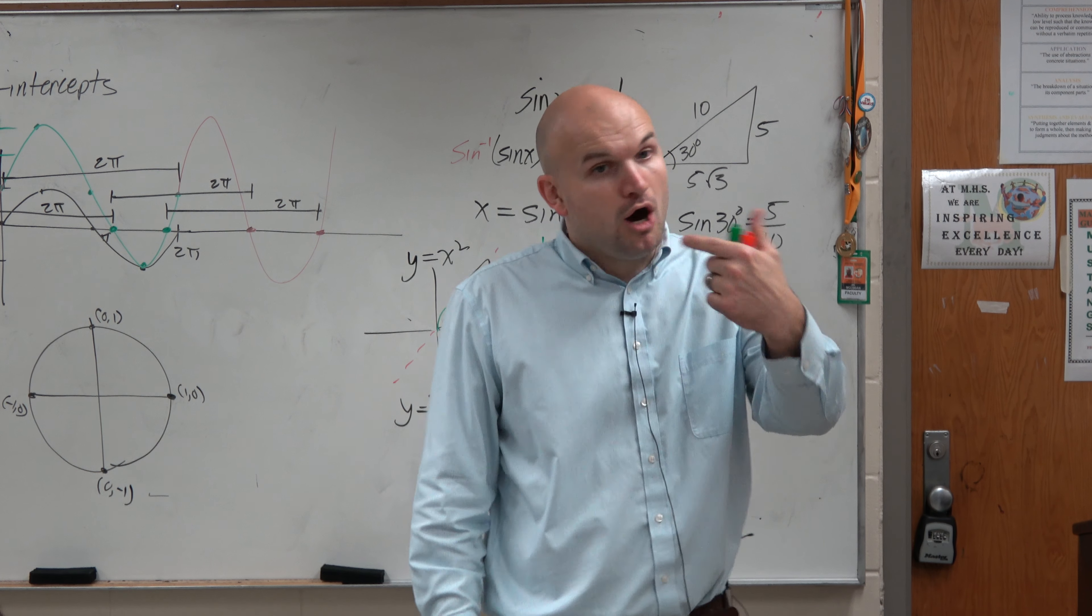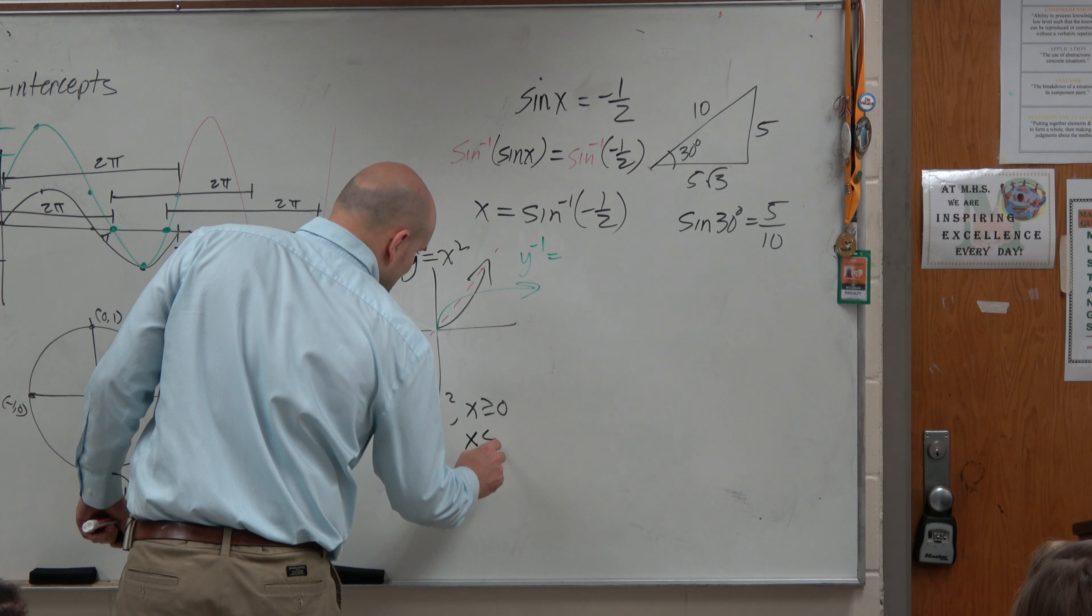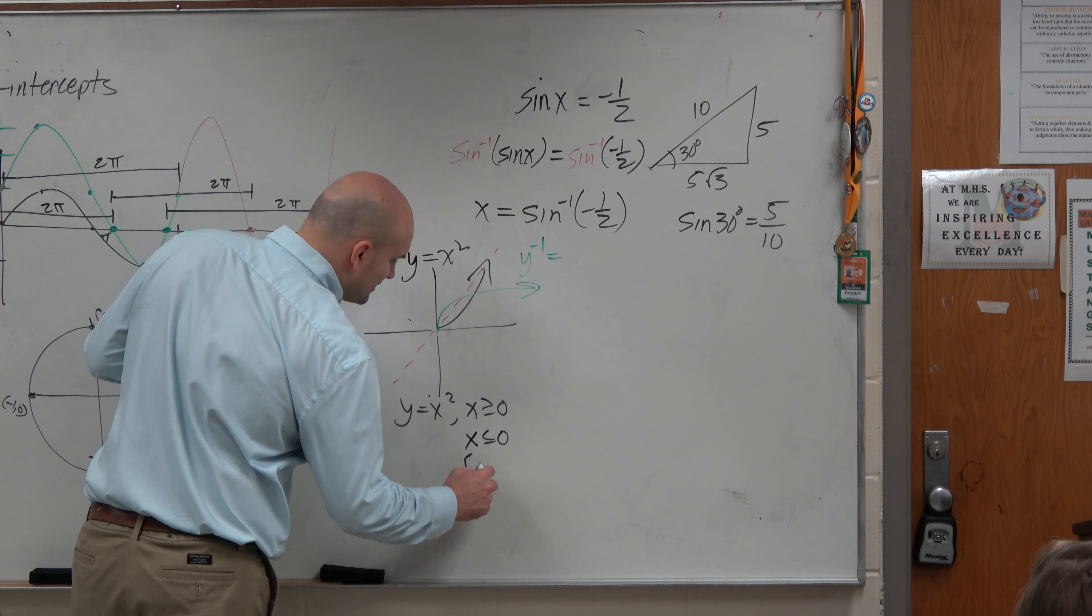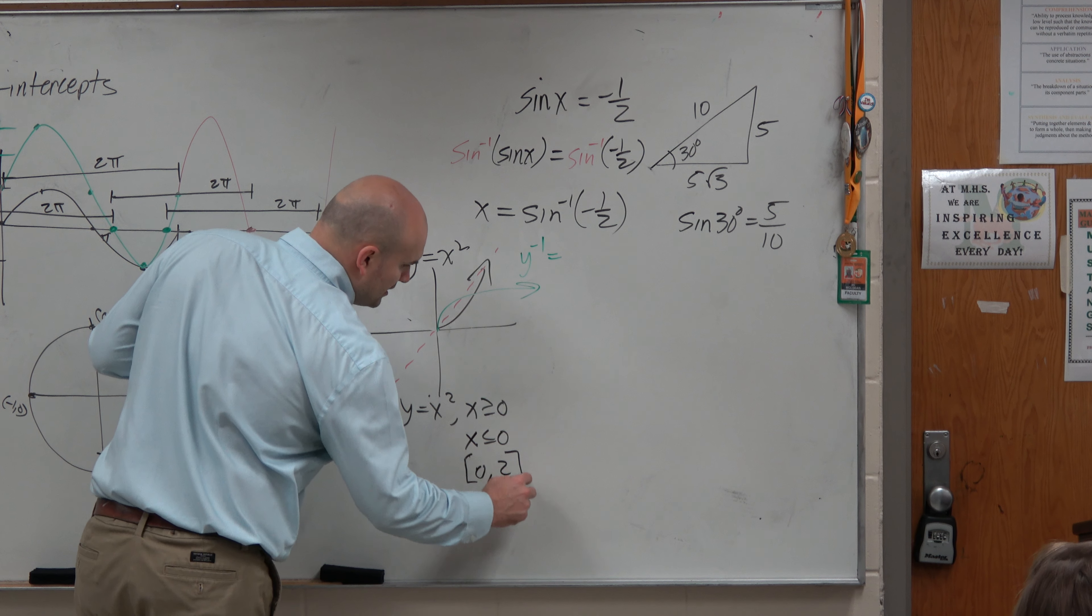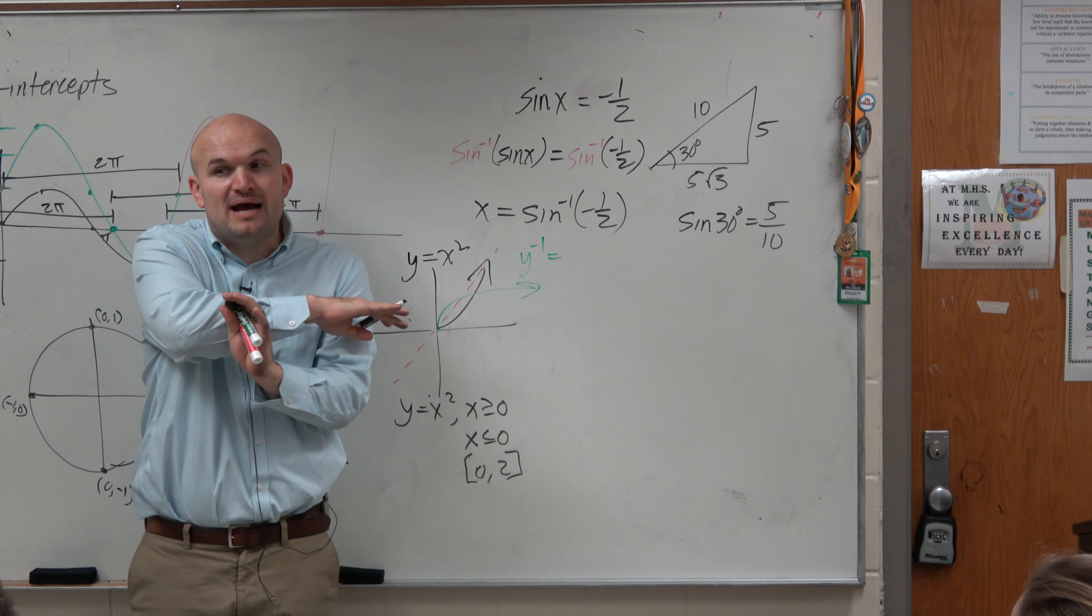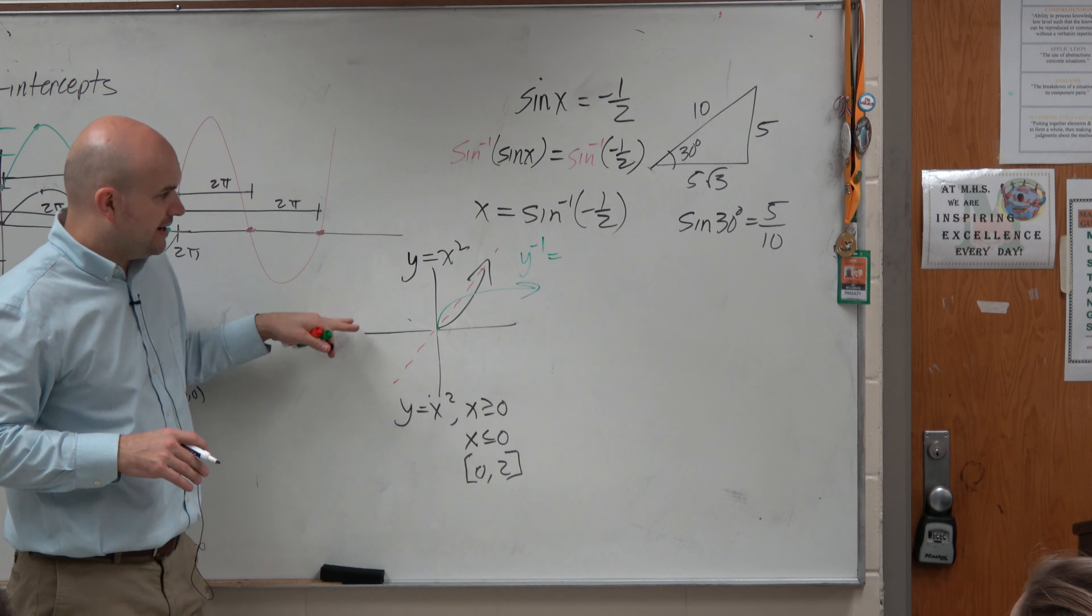Now, you are always given the restriction: x is greater than 0, x is less than or equal to 0. You know, you could also give a restriction from like 0 to 2, whatever. As long as the graph, whenever you're finding an inverse of a function, it has to pass the horizontal line test, meaning it has to be one to one, right?